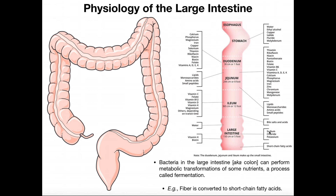In summary, the colon absorbs water, ions, vitamins K and biotin, and short-chain fatty acids from bacterial fermentation of fiber. The other main function is elimination of the resulting feces from the rectum through the anus.